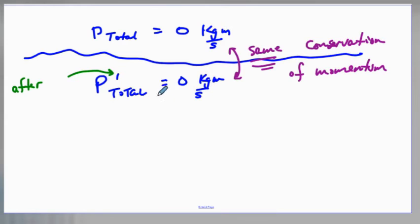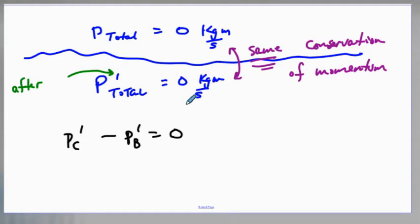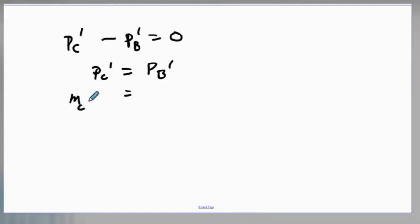We know that the total momentum after has to equal zero. So the momentum of the cannon after the collision plus the momentum of the ball after the collision has to equal zero. Because they're in opposite directions, we subtract them. The momentum of the cannonball after the collision equals the momentum of the cannon. The momentum of the cannon equals mass of the cannon times velocity of the cannon. The momentum of the ball equals mass of the ball times velocity of the ball after the collision. This is a very fundamental equation — it'll be common in every one of these types of questions.